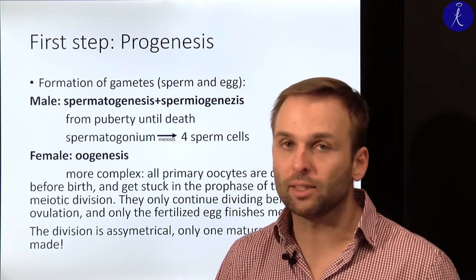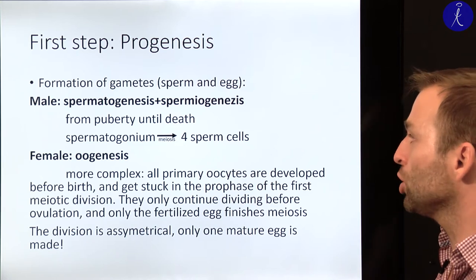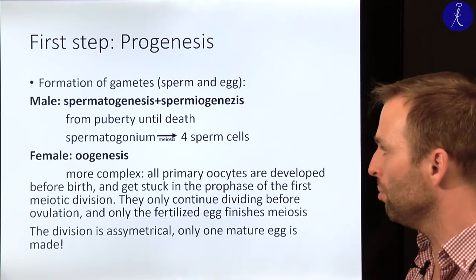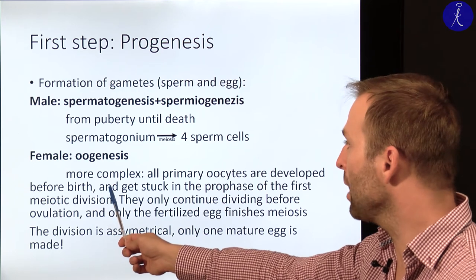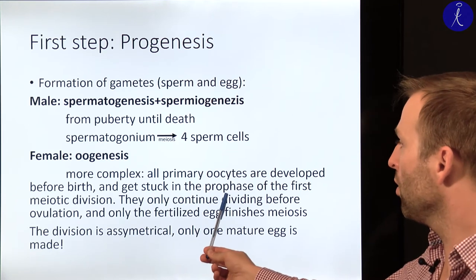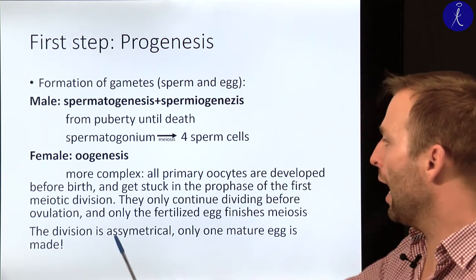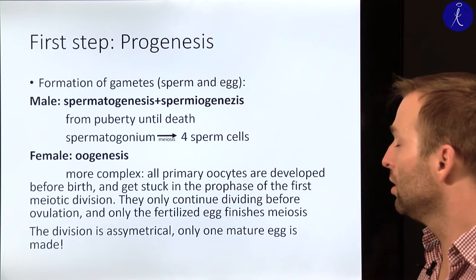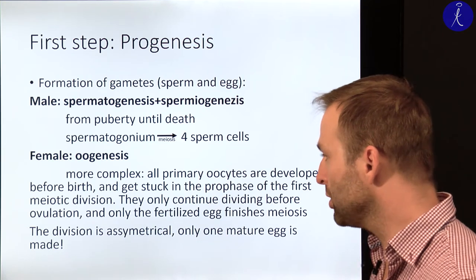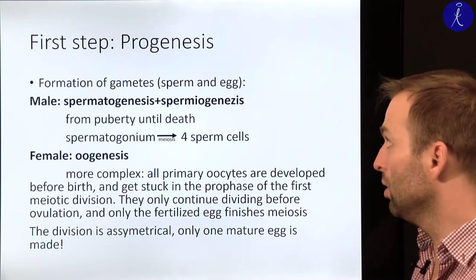In contrast, females are much more complicated. The oogenesis process — the building of the egg — is much more complex. You have primary oocytes which develop before the birth of the woman, and these primary oocytes are stuck in the prophase of the first meiotic division. This meiotic division only continues before actual ovulation, and the final second meiotic division can only be finished by a fertilized egg cell. The division is also asymmetrical, meaning from one oogonium only one major egg is made.